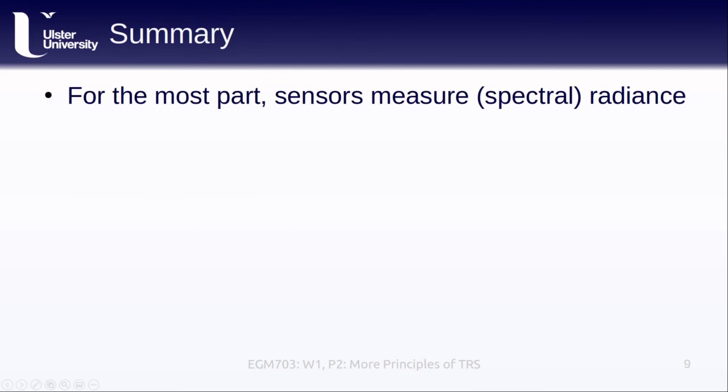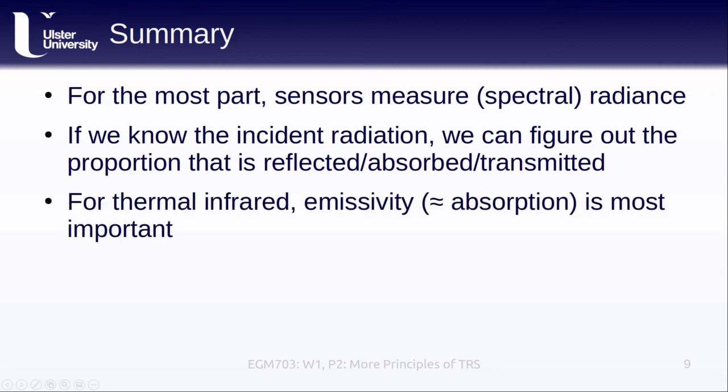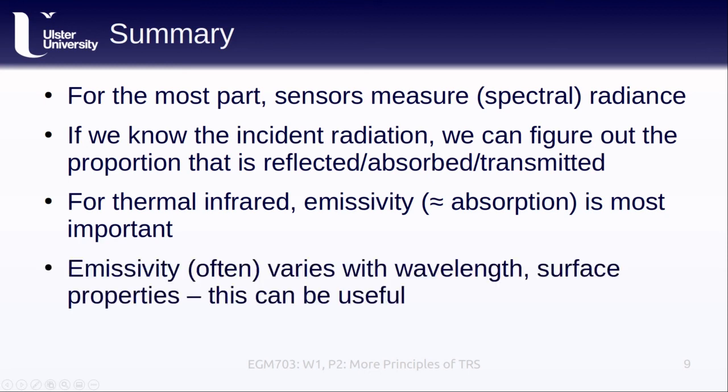For the most part, sensors are measuring radiance. To be slightly more precise, they're measuring the spectral radiance of whatever surface we're observing. If we know the incident radiation on an object or surface, then we can figure out what proportion of that radiation is reflected, absorbed, or transmitted by the object. In the thermal infrared, emissivity, which is approximately equal to the absorption of an object or a surface, is the most important of these properties. Emissivity often varies with wavelength or surface properties, which is something that we can use to help identify or study different surfaces or materials.